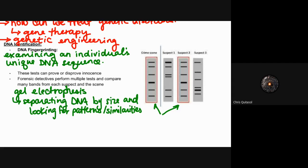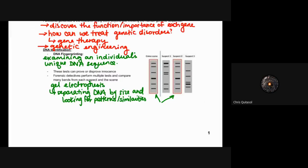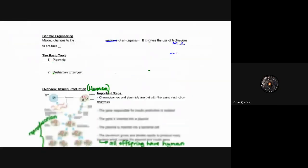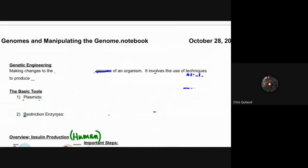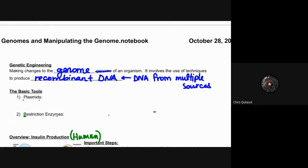I'll talk a little bit about the basics of genetic engineering, and then I will do the rest tomorrow because I want to give some people the opportunity to work through it on their own, as well as read through it and ask questions. So what is genetic engineering? Well, it's the ability to change the genome of an organism. It involves using techniques to produce what's called recombinant DNA—this is DNA from multiple sources.